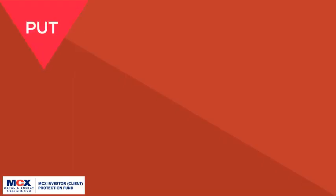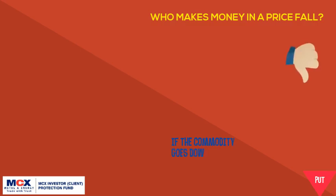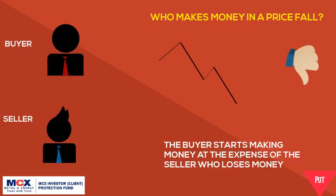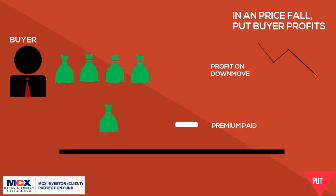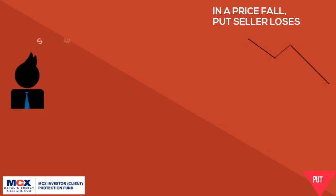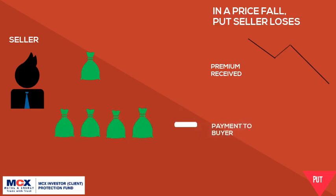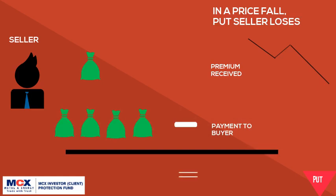When the underlying commodity price falls, the buyer starts making money at the expense of the seller. Since the buyer possesses the right to sell at a higher price, and when the buyer exercises that right, the seller is obligated to buy the underlying at higher levels. In this example, the buyer sells 4 bags at the higher strike price and makes a gross profit from the price fall, but pays 1 bag as the premium initially, so the net profit for the buyer is 3 bags. On the flip side, the seller initially gains 1 bag as option premium but ends up buying 4 bags at the higher strike price, resulting in a net loss of 3 bags.